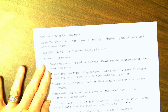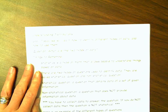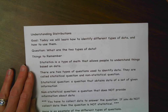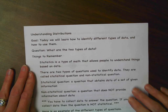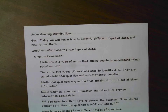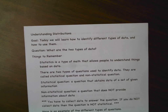Okay, and here is our notes page. I don't want you to get overwhelmed, but we do have a lot of notes because there's a lot of information you need to understand about statistics and data analysis. The biggest part is understanding the graphs and how they work and what data we'll be looking at. Our goal: today we will learn how to identify different types of data and how to use them. The question I want you to think about is: what are the two types of data?